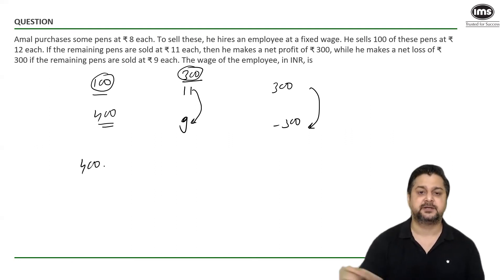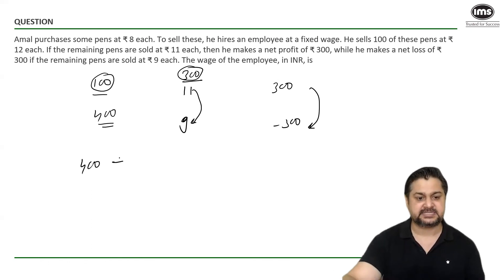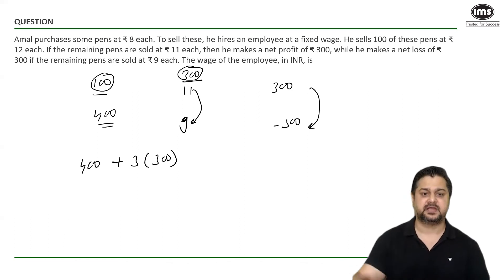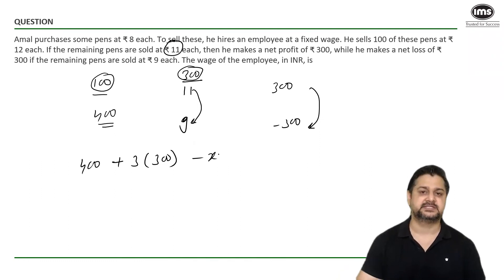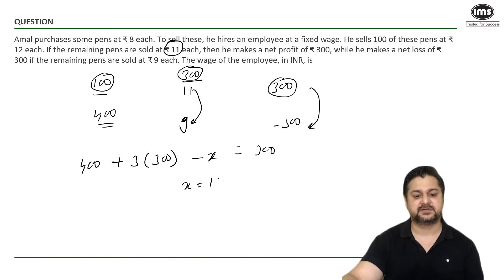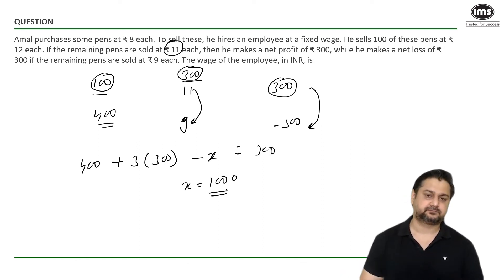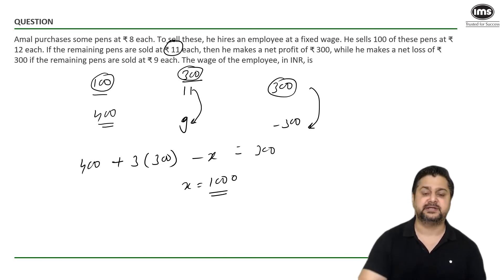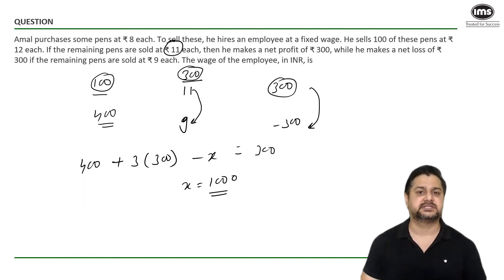Using the first condition: ₹400 profit from 100 pens, plus 3 × 300 = ₹900 from the remaining 300 pens, minus the employee wage x equals ₹300 net profit. So x = 1000 rupees — the same answer. I hope everyone understood the question. Please attempt it and write your answers in the comment section. Thank you so much.